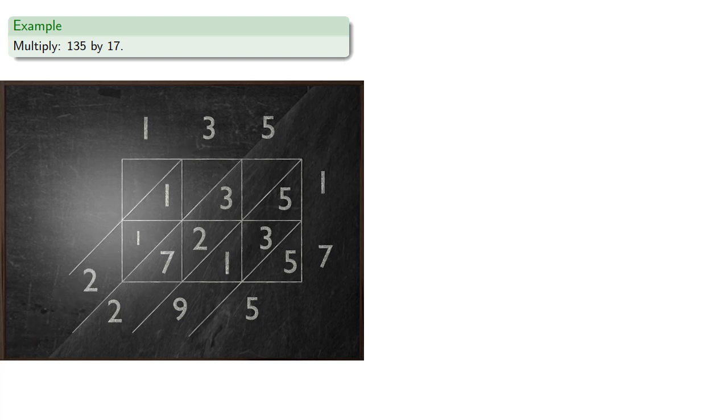And that carried 1 was never really in this diagonal, so we'll get rid of it. Reading the digits along the outside corner, we get the product 2,295.